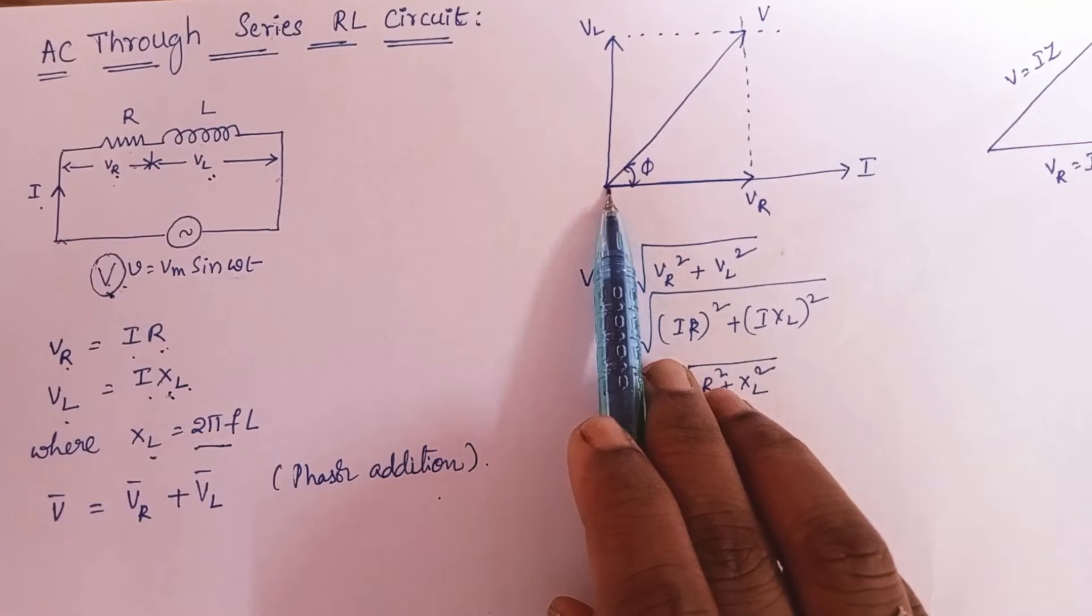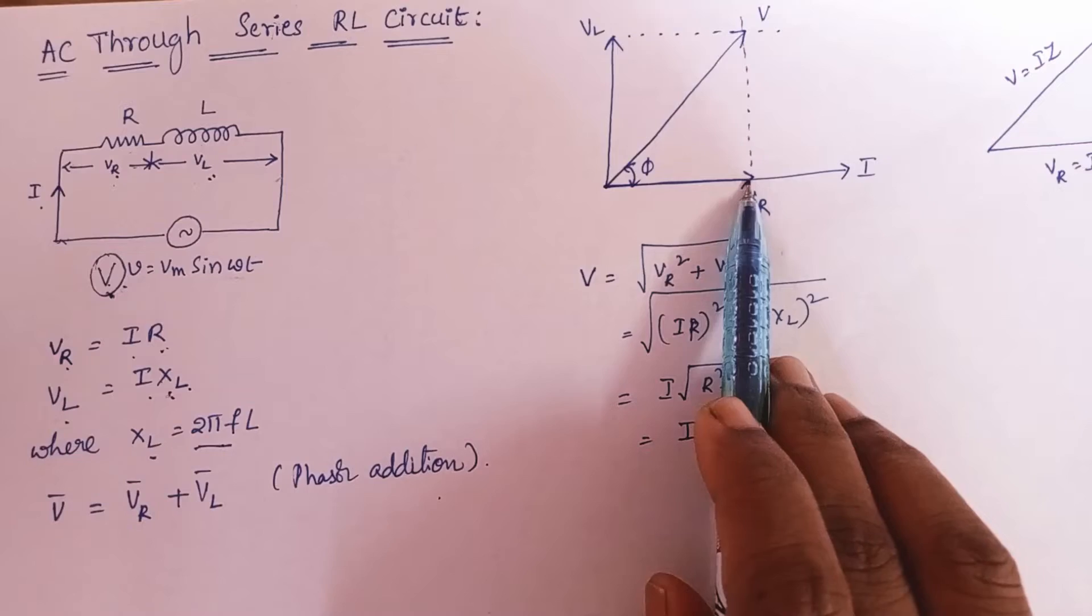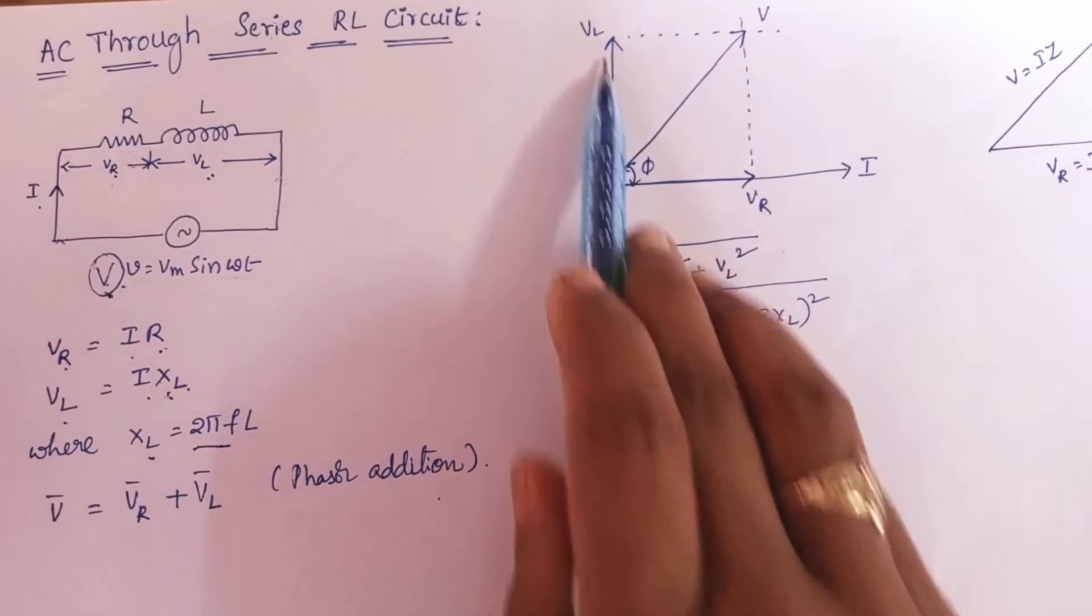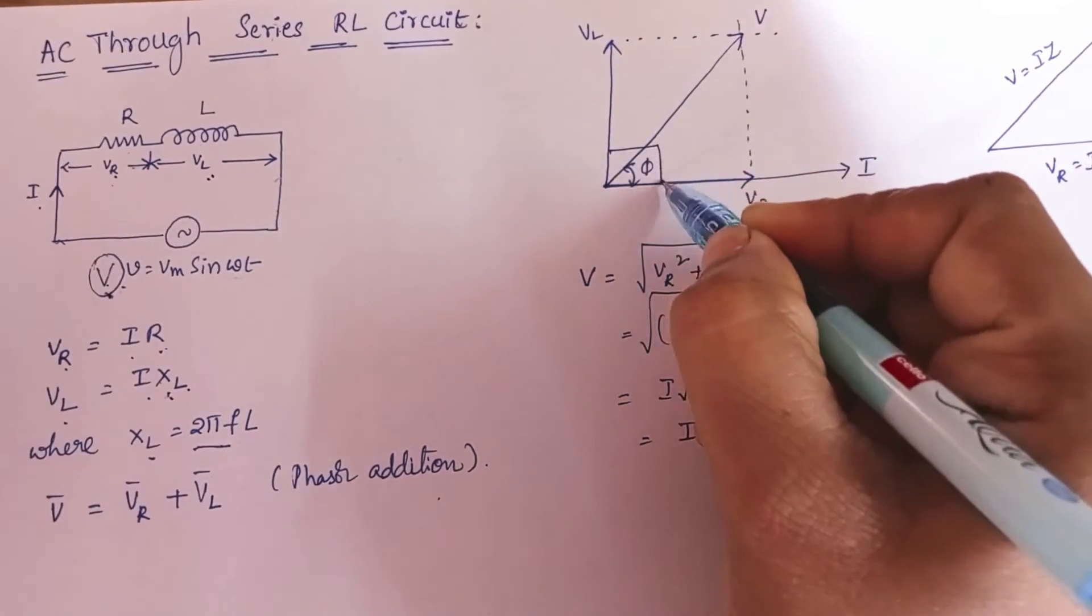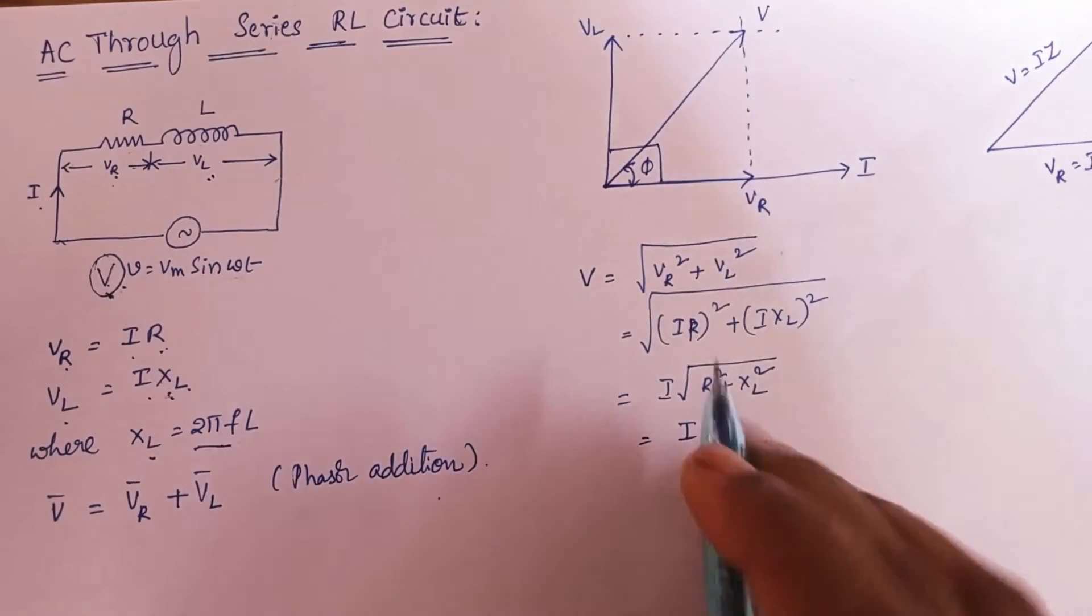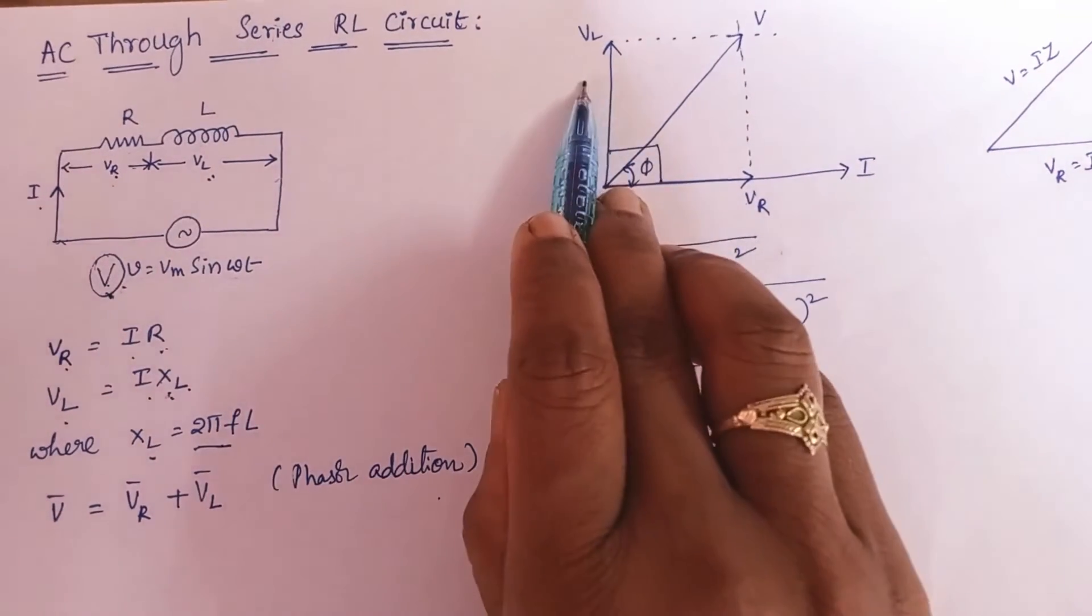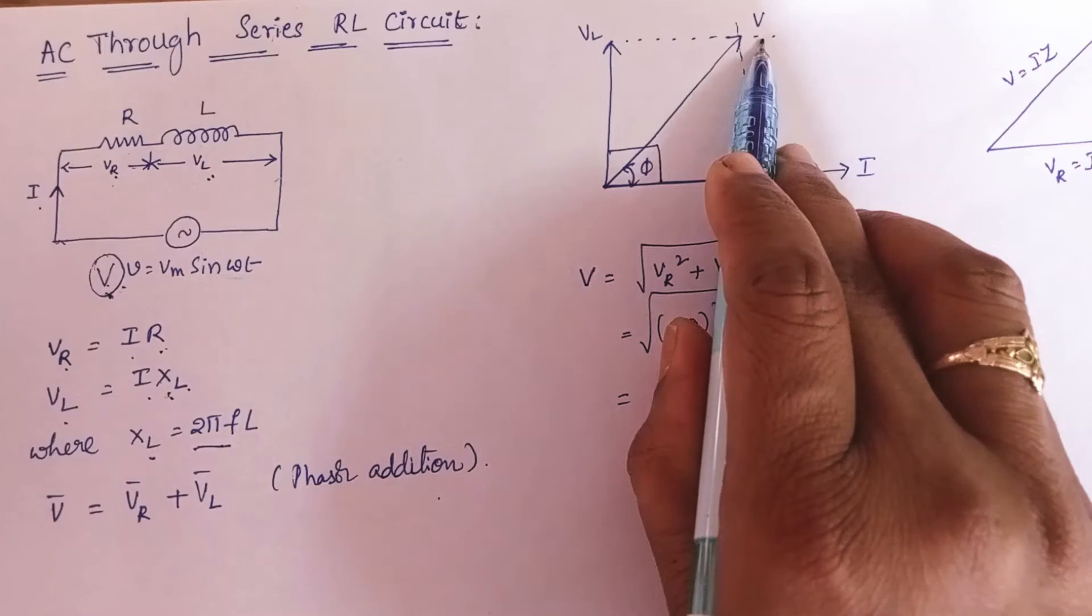And because it is a pure resistor, voltage will be in phase. It is a pure inductor, so it will maintain the angle 90 degrees here. So the resultant of Vr and Vl will be your supply voltage V.